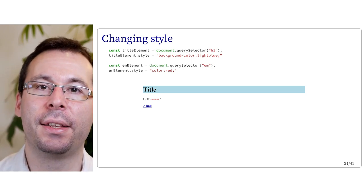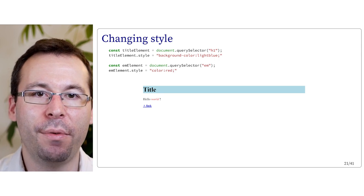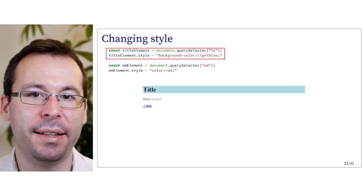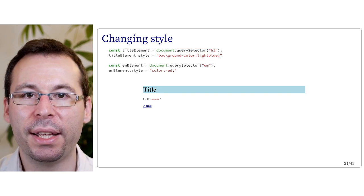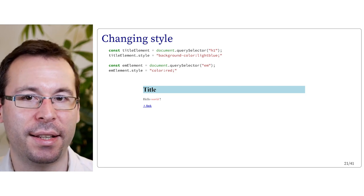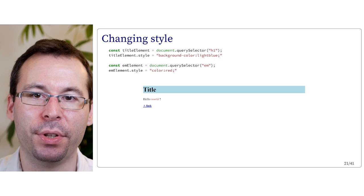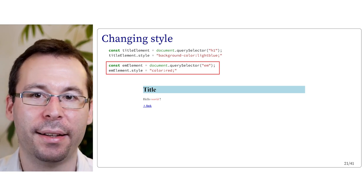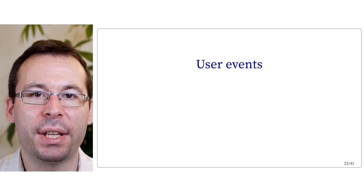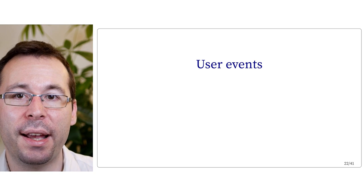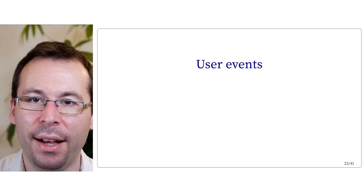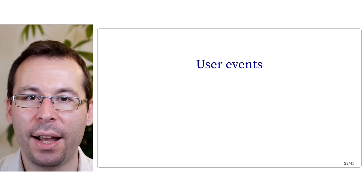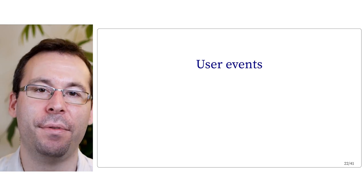Another thing we can do is change the style associated to an element from JavaScript. For instance, we select the h1 title element and set its style property by setting the background color to light blue — we write the string corresponding to CSS syntax. Similarly, we change the color of the word in the em tag to red. So these previous examples were not very useful, as we could have obtained the same result by writing directly in HTML and CSS. Now we are going to see how to handle user events — typically the click or motion of the mouse — which will allow us to add more interesting behavior to our web page.